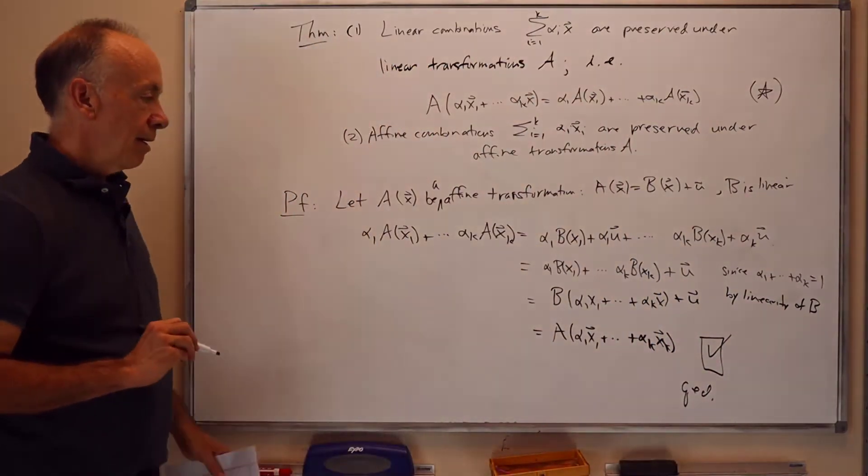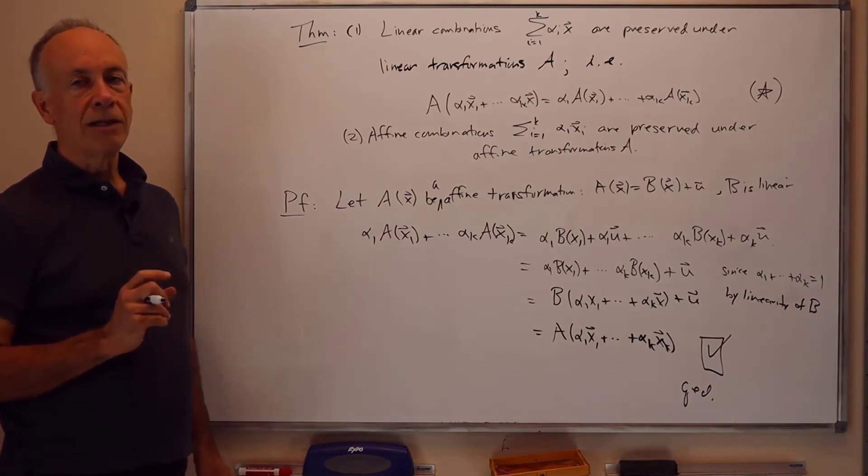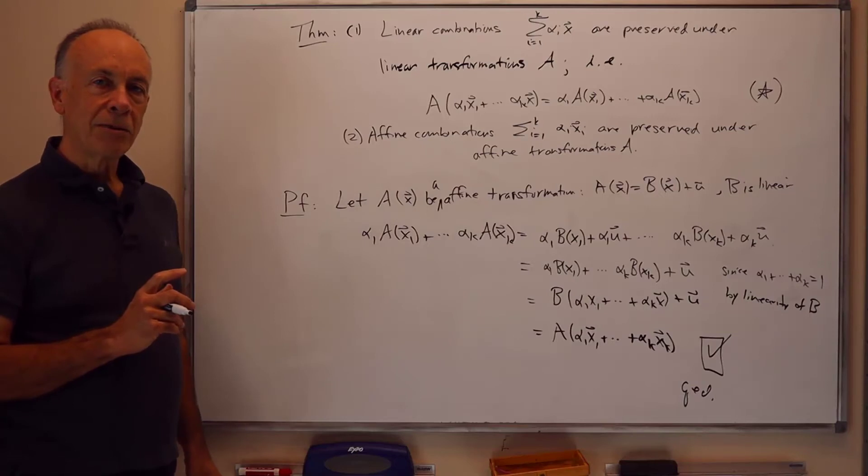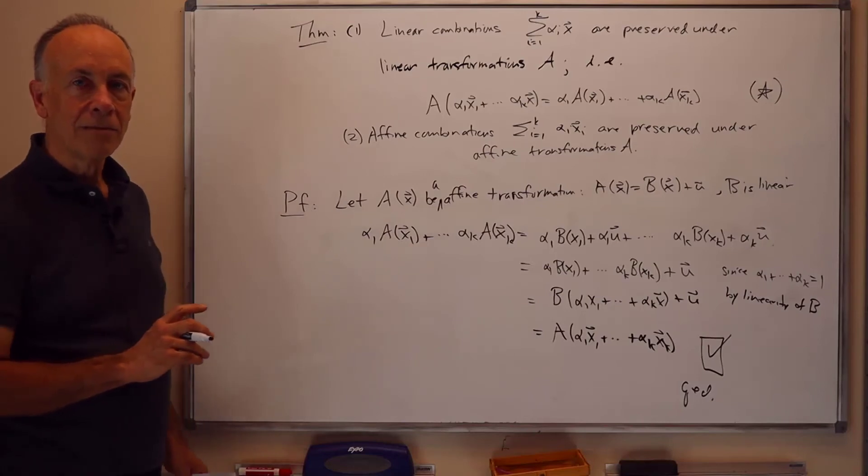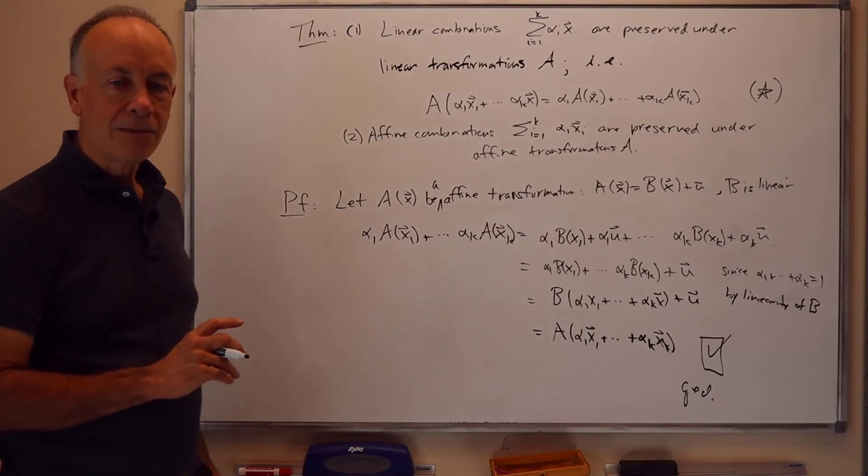As I said already, this will be convenient for doing things like moving triangles around, and later on when we get to Bezier curves we'll use it to move control points on Bezier curves around, and this theorem will say that everything works out the way it should. That's the end of this presentation, thank you very much.